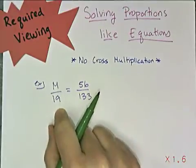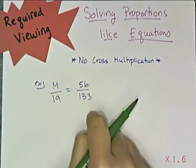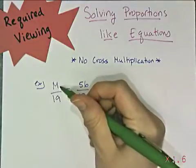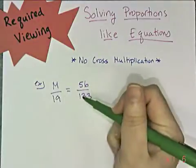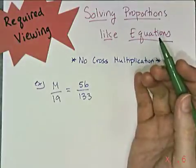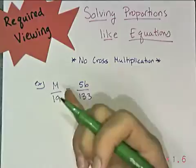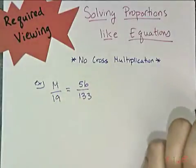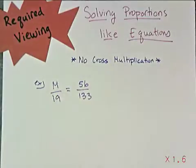Instead of seeing this as some fraction equals some fraction, I see this as some variable has been divided by 19 and it equals this number here. Now this number just happens to be a fraction, but I don't really care about that. It's just something divided by 19 equals 56 over 133.